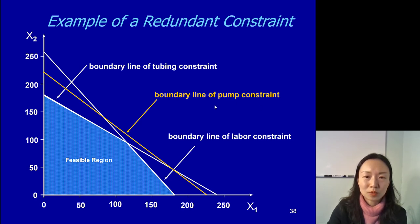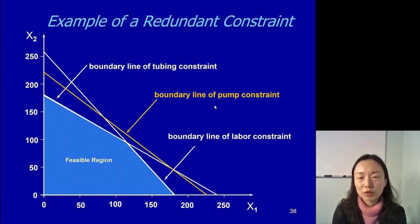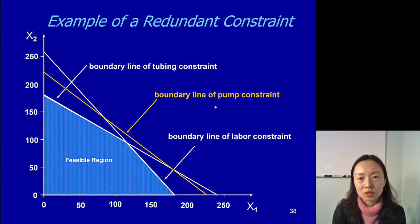So this is the definition of a redundant constraint. You will have other problems in the future where you may find some constraints are just redundant because they will be satisfied for sure, or they just don't play any role in defining the feasible region. In those situations, you can still write out those constraints, and if you know it's redundant, you can put a note that says 'this is redundant.'